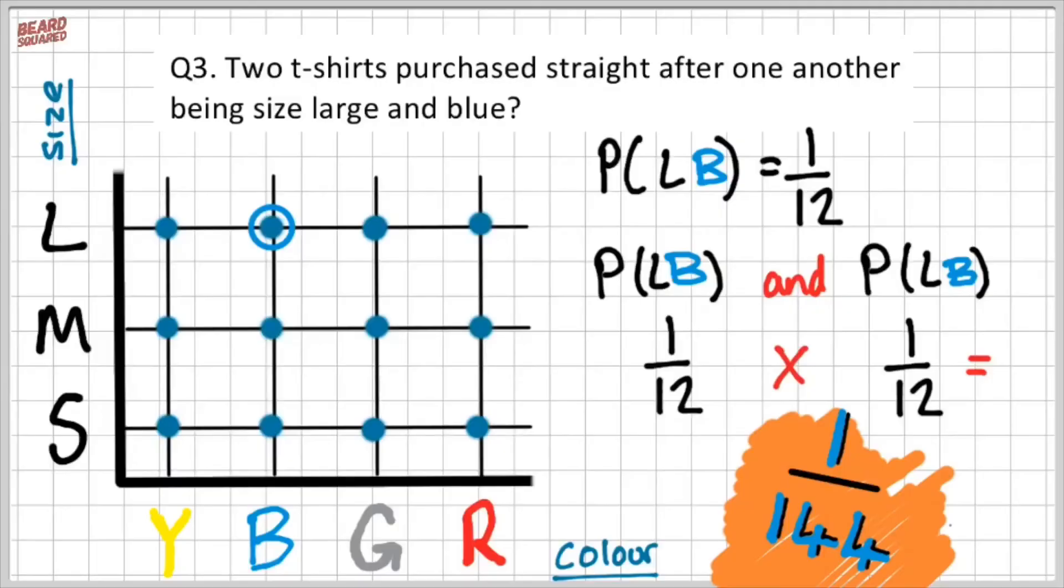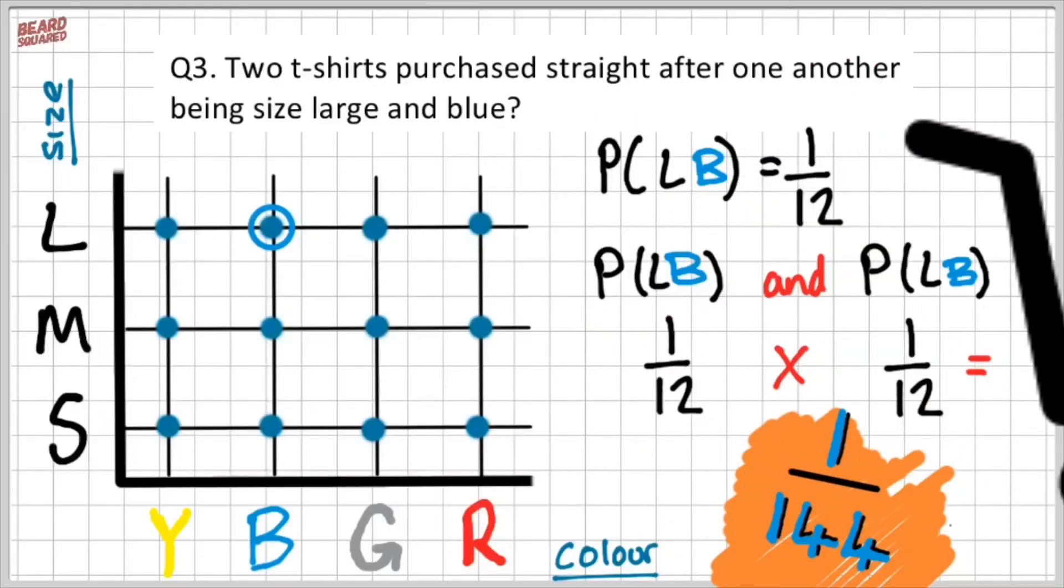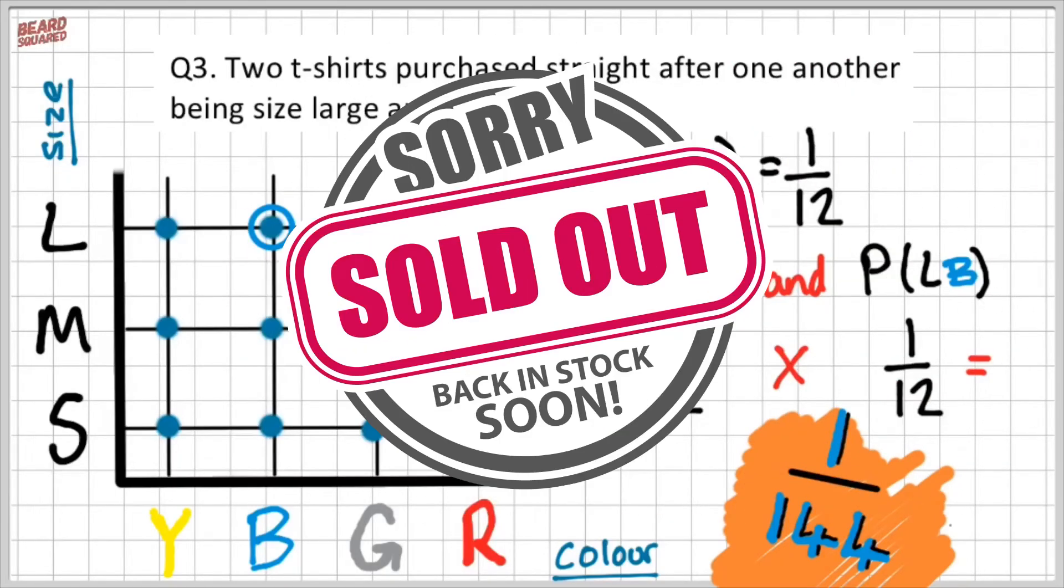So she might run out of yellow t-shirts or blue t-shirts or size medium. And it happens because one size might be popular over another size. But in this question, we are taking that each size and color is equally likely and popular.